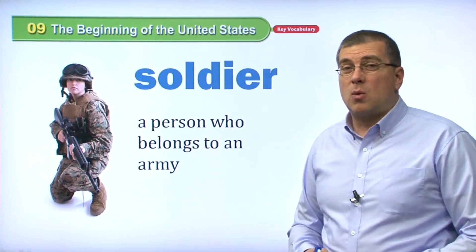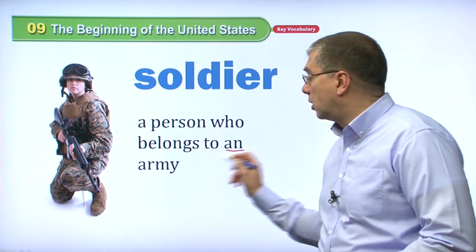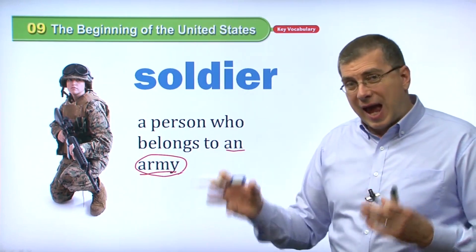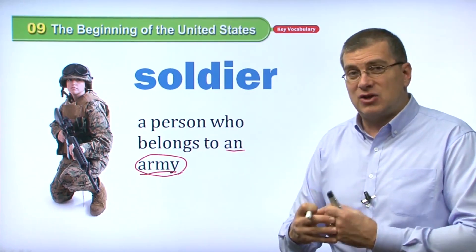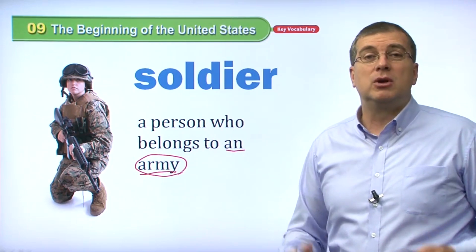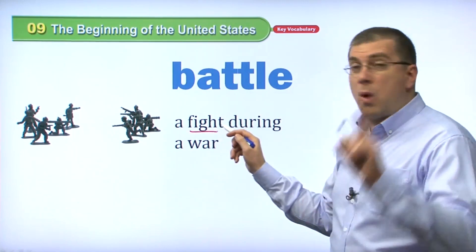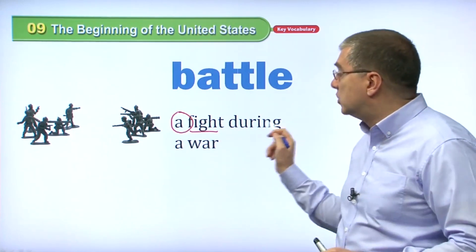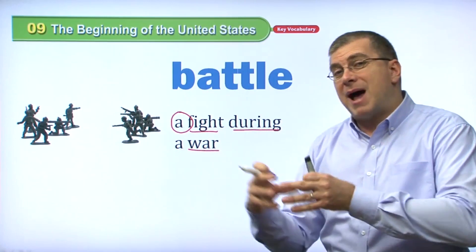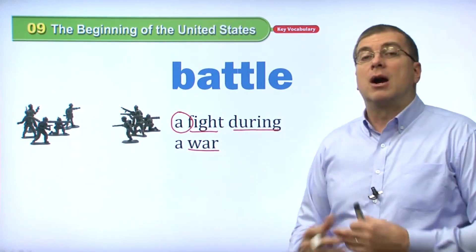If we talk about war, we should talk about soldiers. A soldier is a person who belongs to an army. An army is what fights in a war. Each country has its own armies, and these armies fight against each other in battles. Soldiers are the people who do the fighting. A battle is one fight — one fight during a war. A war is a long period of time, so during a war there are many battles — many separate individual fights.